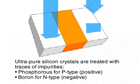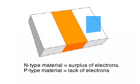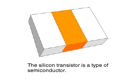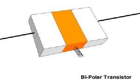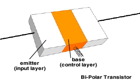N-type material will have a surplus of electrons, whereas P-type material will have a lack. P-type material has a surplus of electron holes and is therefore positive. The silicon crystal is called a semiconductor because it will only conduct a small amount of current unless a change occurs at the junctions of the layers. In bipolar transistors, the input layer is called the emitter, the control layer the base, and the output layer the collector.